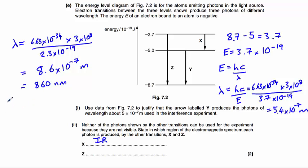And if we do the same exercise again for Z, that will give us a wavelength of 3.3 times 10 to the minus 7, which is 330 nanometres.